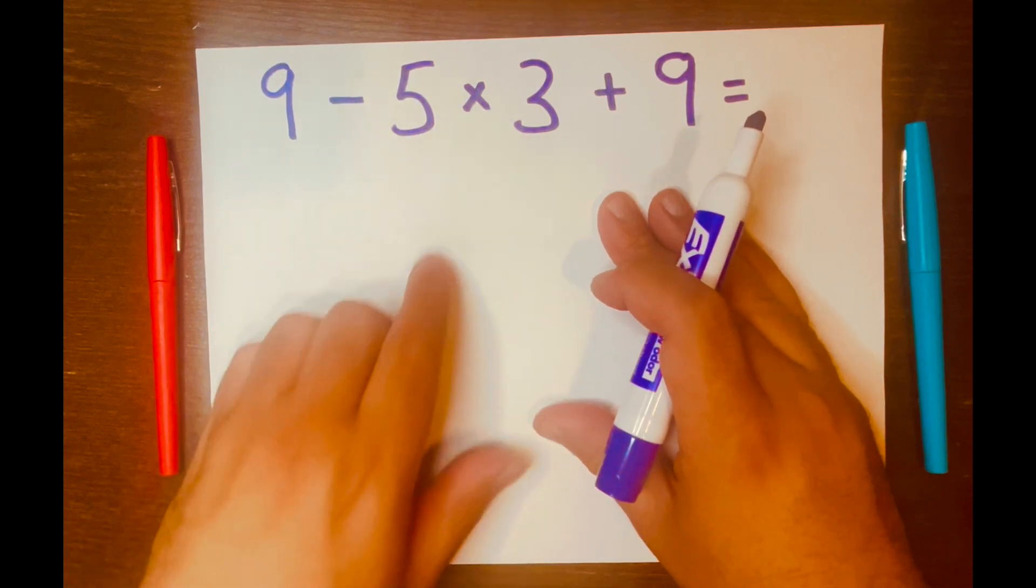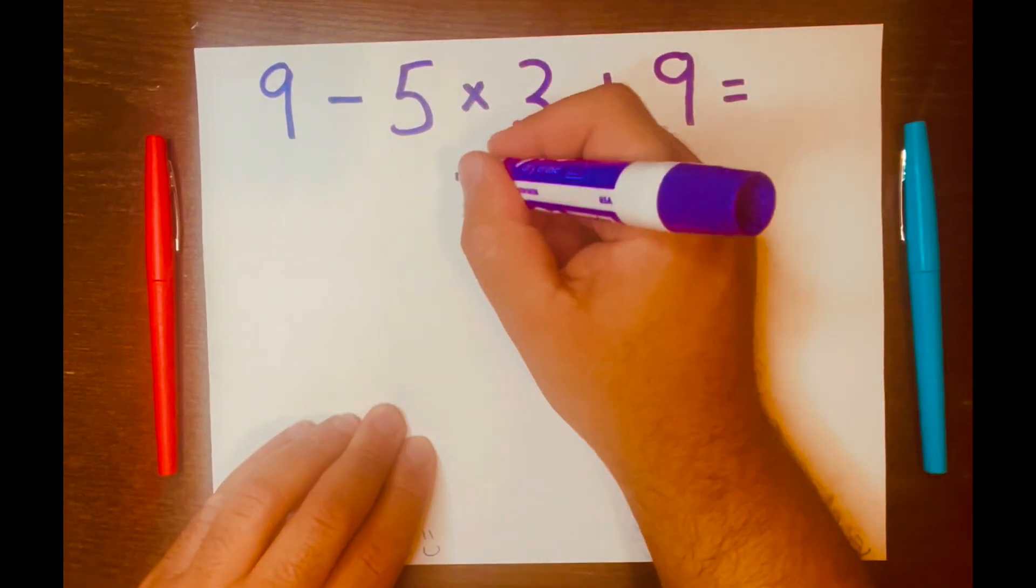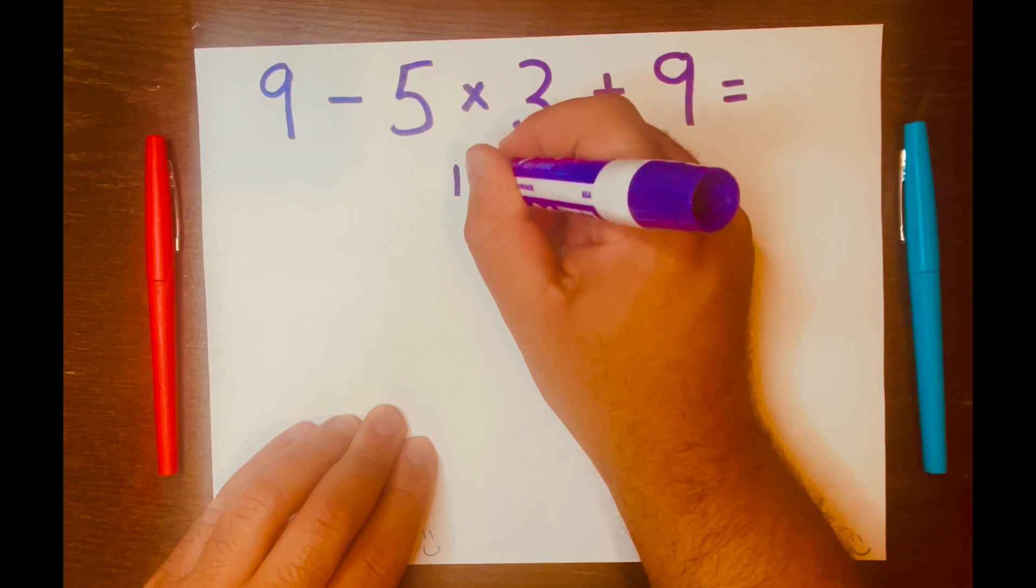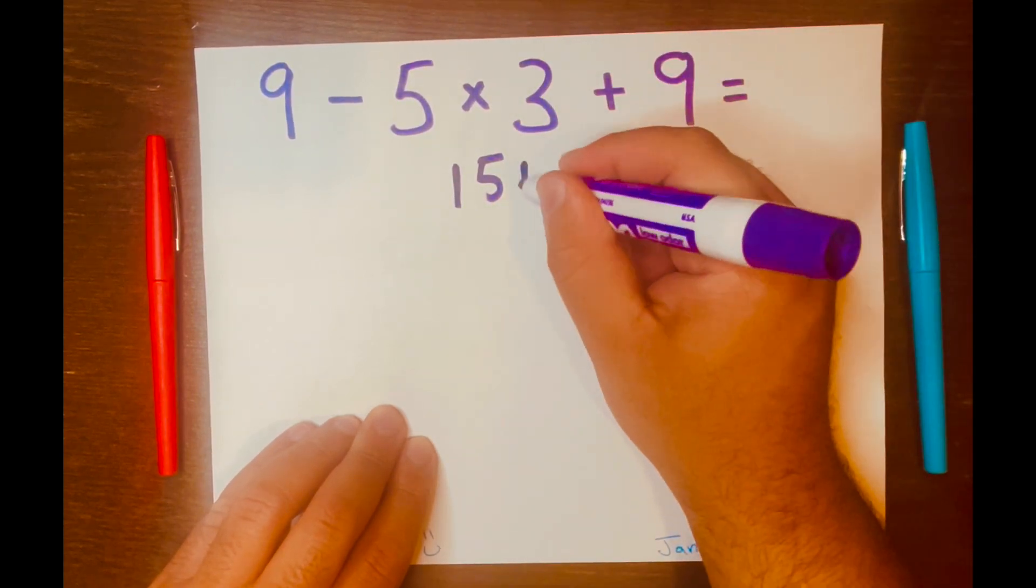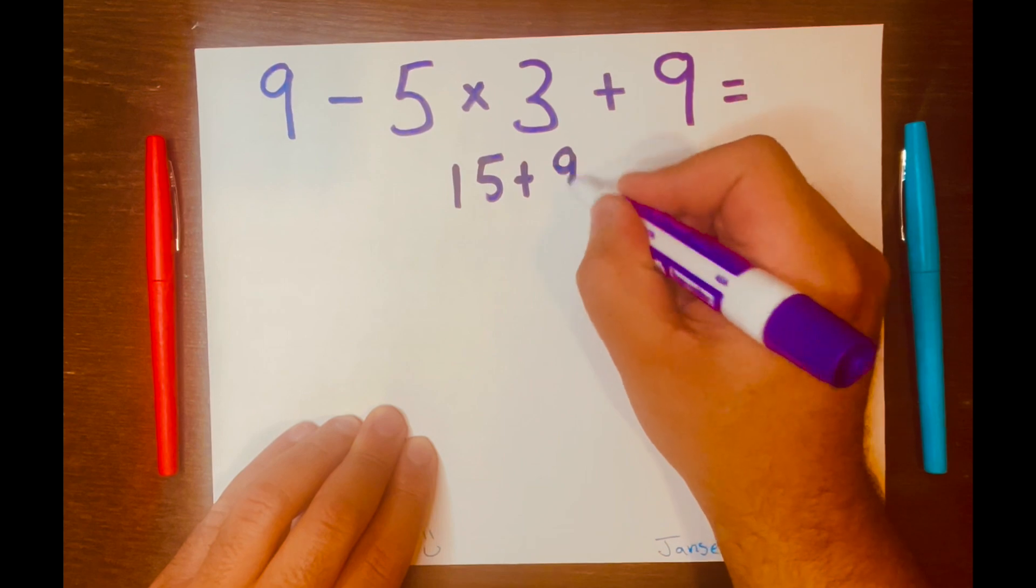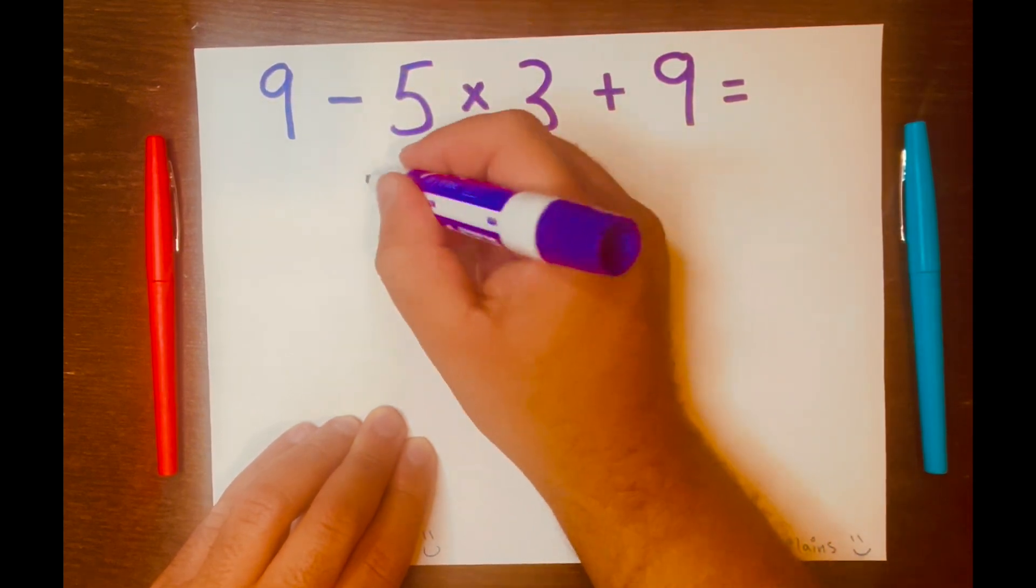So five times three will go first. Five times three is 15, right? And I'll bring down the addition symbol, the nine, the minus symbol, and the nine.